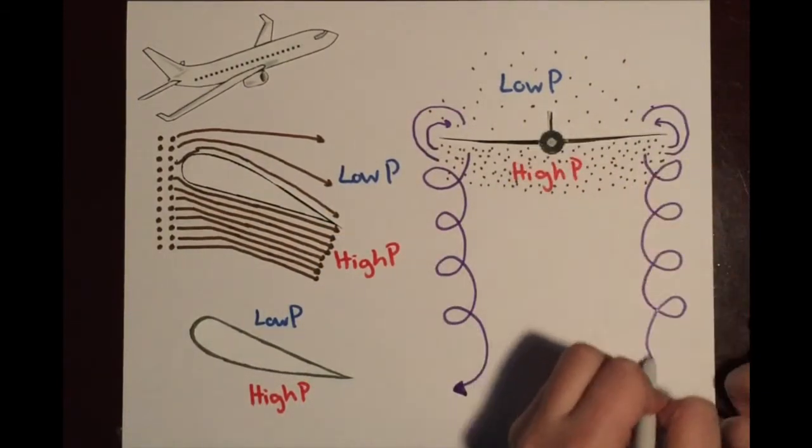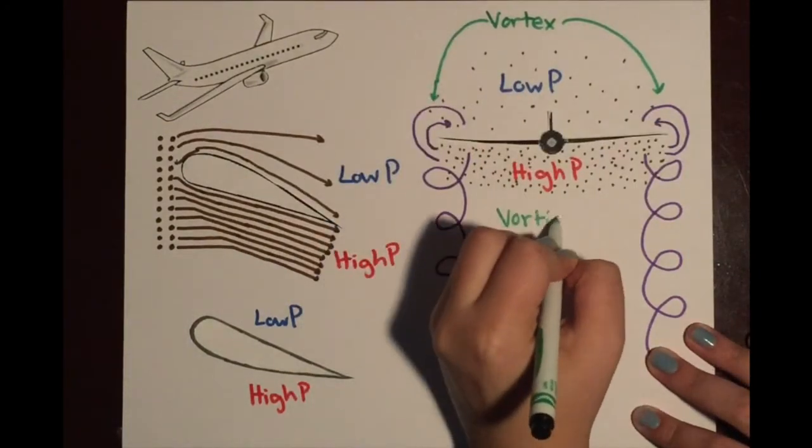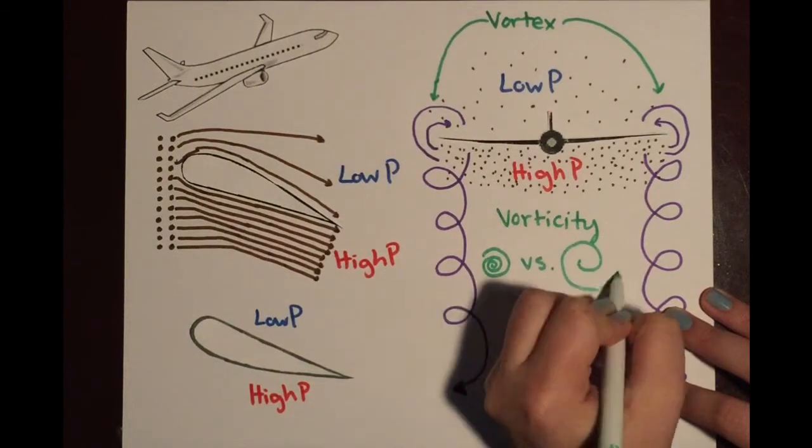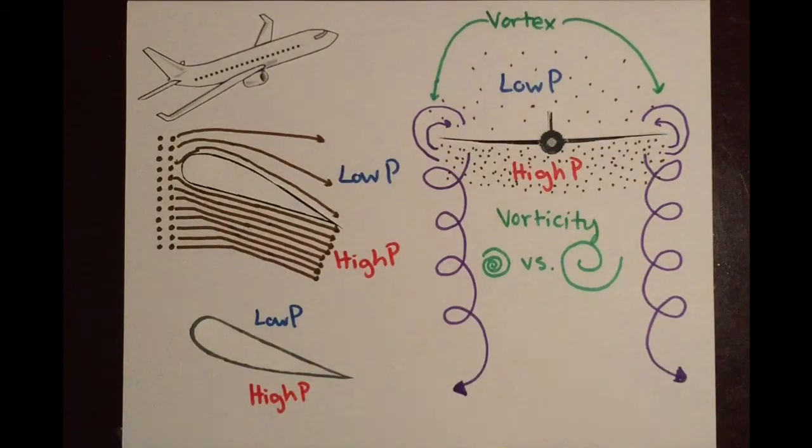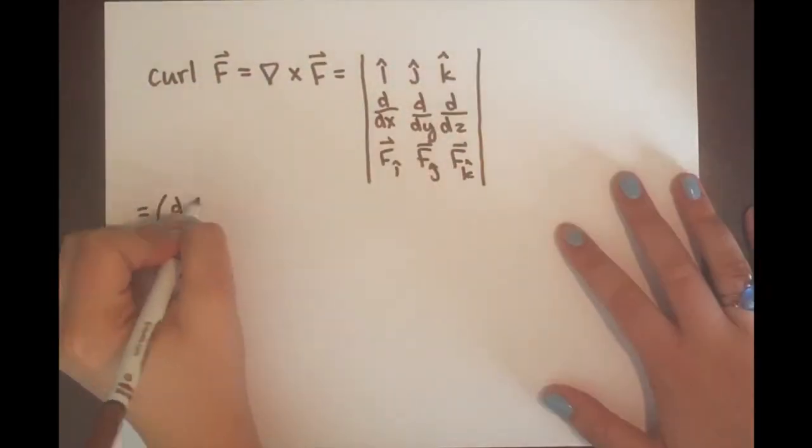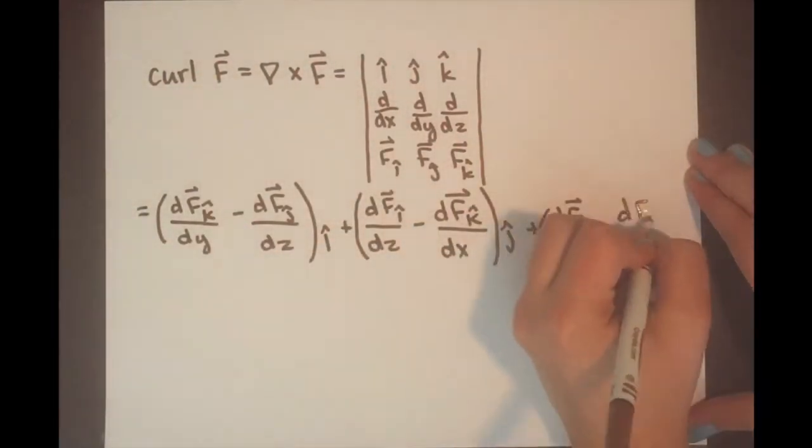But how can we measure the vorticity or the spiraliness of the vortex? First, we have to create a function that represents the vortex. And then we have to find the curl of that vortex. We can take the curl of this function that represents the path taken by an air particle in the vortex by finding the cross product of the gradient and the function.